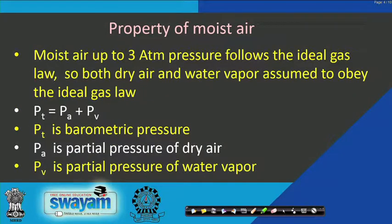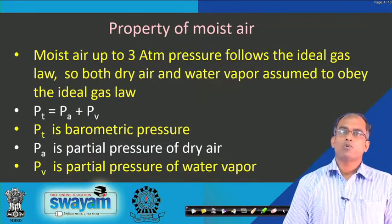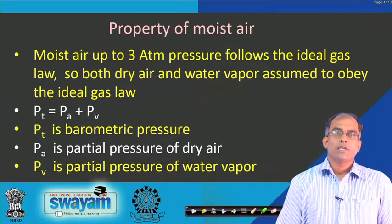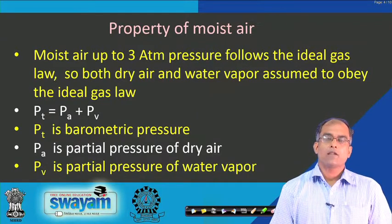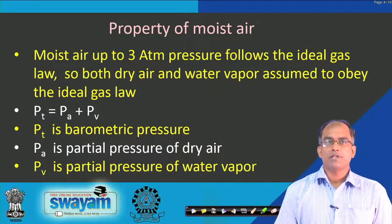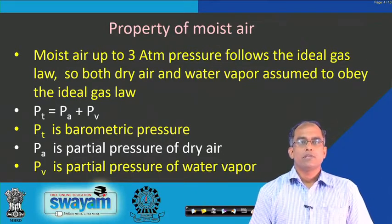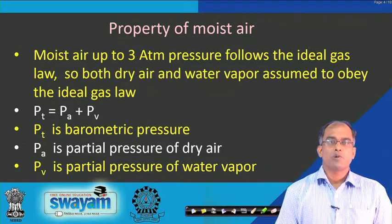Properties of moist air: moist air up to 3 atmospheric pressure generally follows the ideal gas law. Both dry air and water vapour are assumed to obey the ideal gas law up to 3 atmospheric pressure. The total pressure P_t is the sum of the partial pressure of dry air P_a and the partial pressure of water vapour P_v.